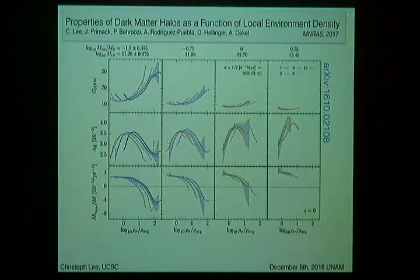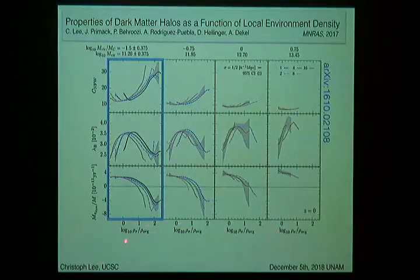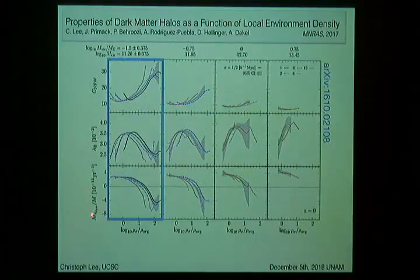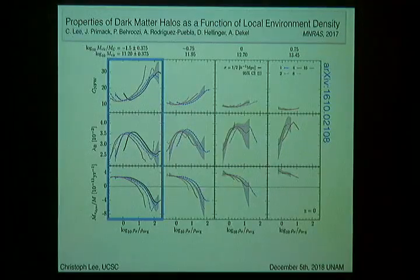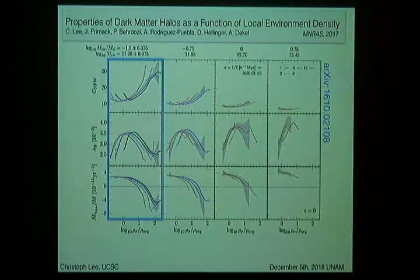In this plot, the x-axis shows the log of the local density around halos normalized by the average density in the simulation. The y-axis shows several halo properties: NFW concentration, spin parameter, and the specific dynamical-time-averaged specific mass accretion rate. There are four different mass bins in the four columns, ranging from a halo mass of about 10^11.2 to 10^12. I'm going to focus on the lowest mass bin.